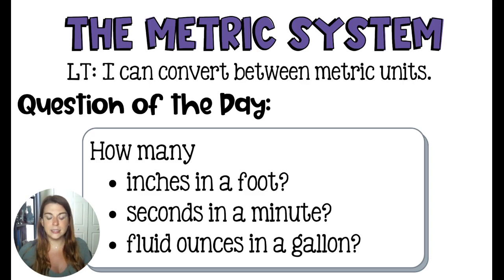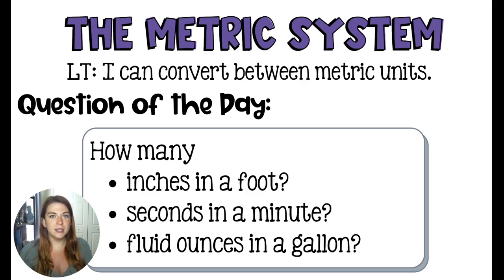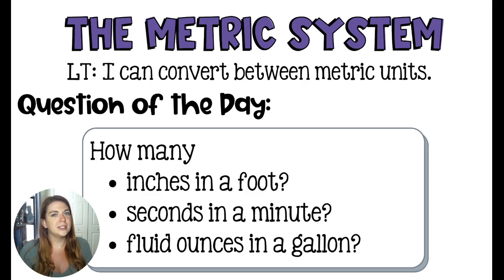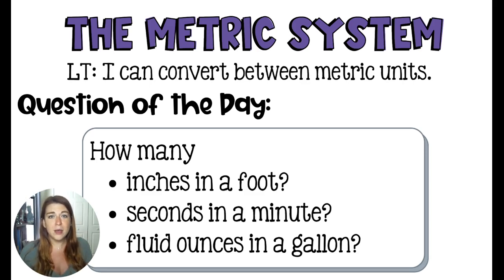So that is a lot, and notice how none of those are the same number. This is why the customary system, or the American system of measurement, is not great for science — because every single conversion is different. The metric system, that's not the case. It's much easier to convert between units, and every country in the world except for America and two others uses the metric system. So when it comes to sharing our ideas with other scientists and sharing lab reports, it's a really great idea that we are all using the same measurement system. So we've decided that the metric system is the science measurement system.